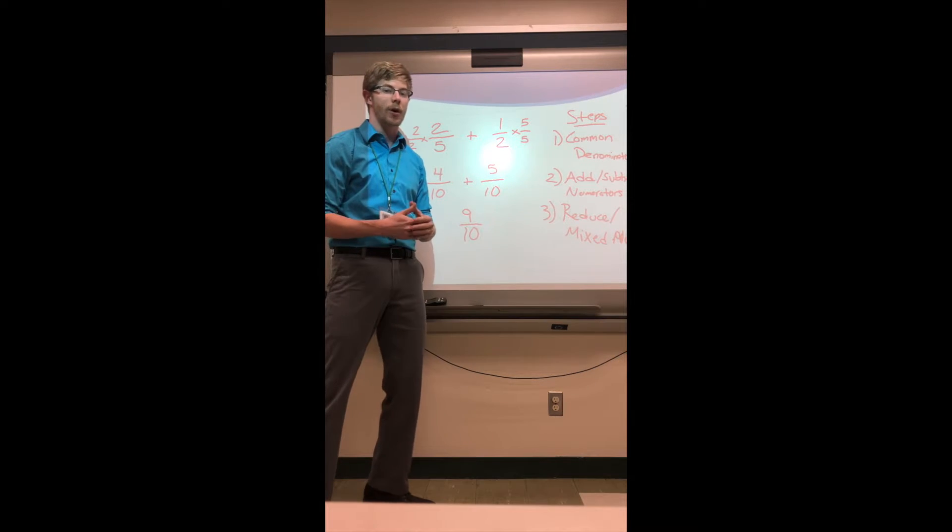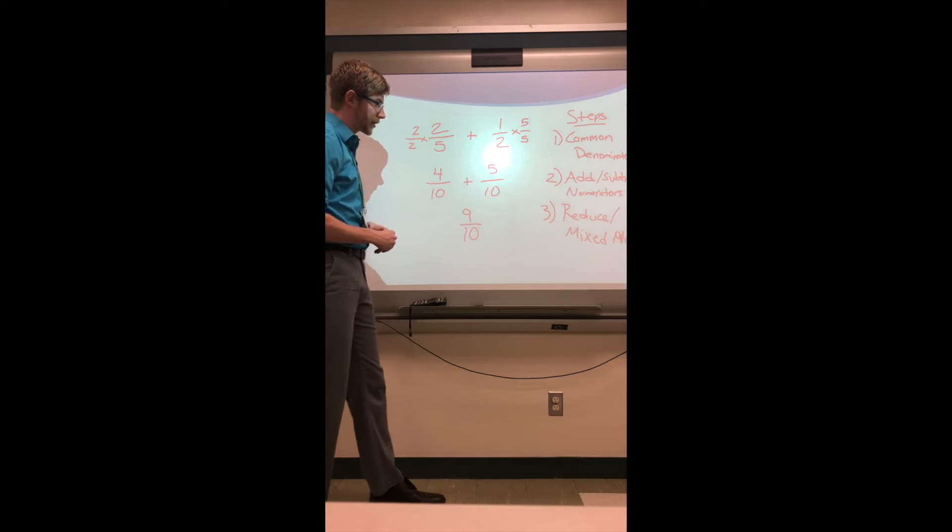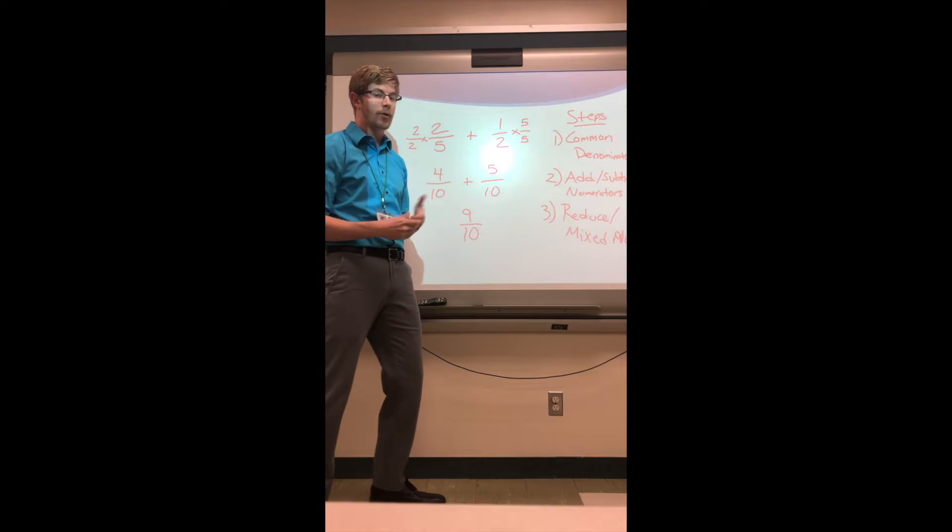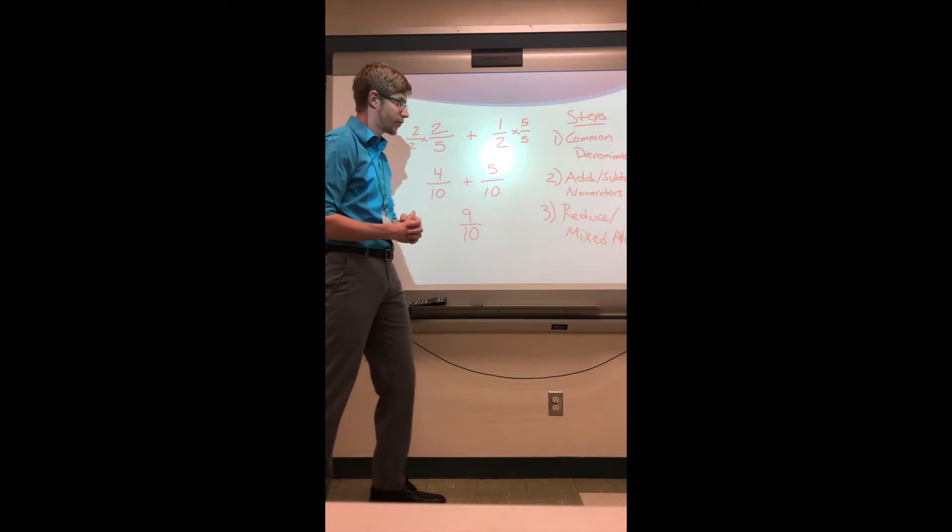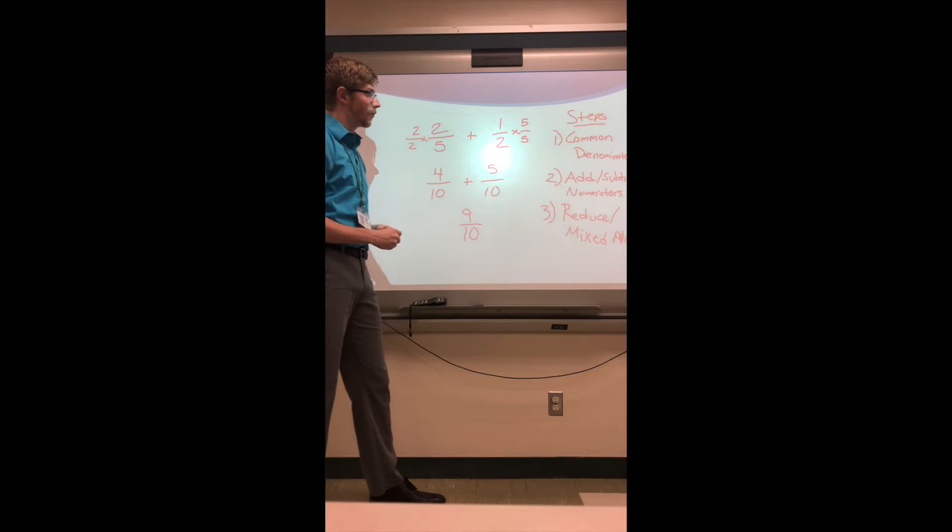We don't have that here. Nine-tenths, our numerator is smaller than our denominator, so step three doesn't apply because it doesn't need to be a mixed number nor can nine over ten be reduced, so this then would be my answer to two-fifths plus one-half.